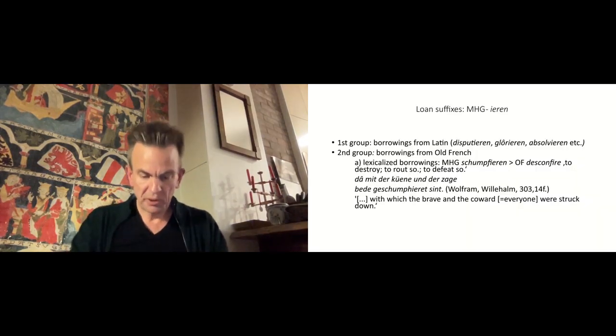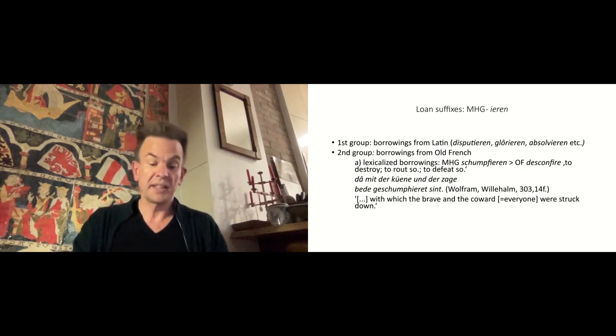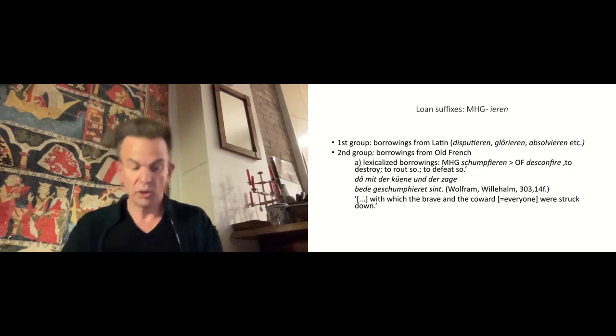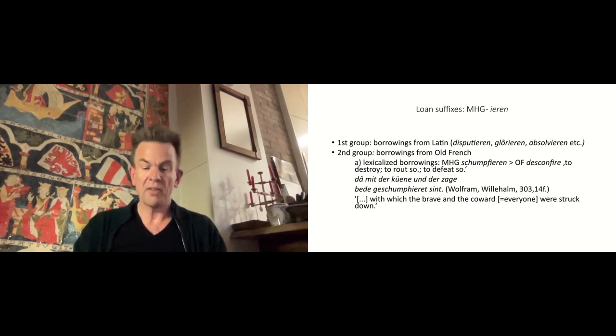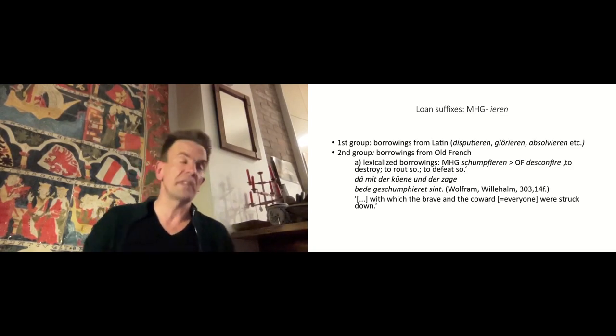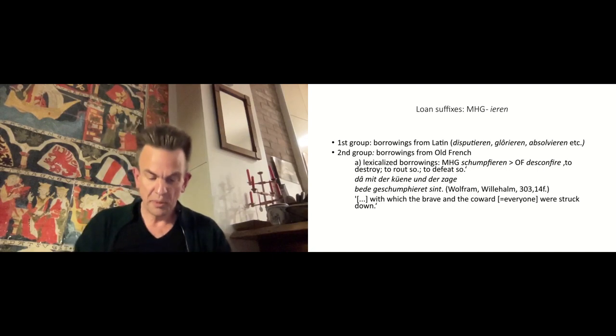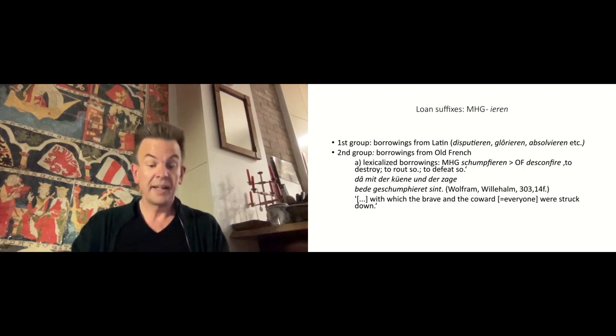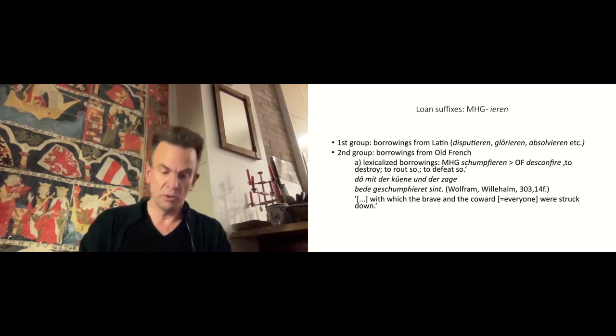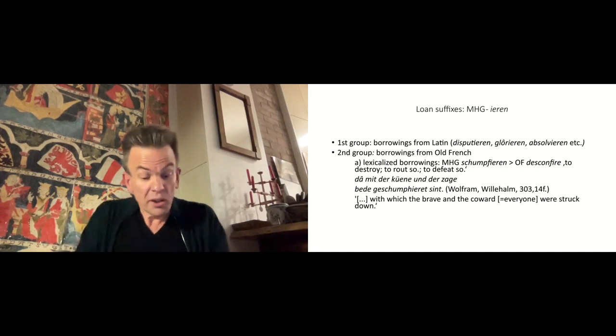The older group of -ieren formations contains lexemes that were borrowed from later church Latin, e.g. disputieren, glorieren, or absolvieren. The younger group includes borrowings from Old French, which came into German as part of the courtly relations we discussed previously. The formations of the second group can be differentiated according to their motivation. In cases like Middle-High German schumpfieren, from Old French desconfire, to destroy, put enemies to flight, defeat, it is probably the lexicalized formation that was borrowed. Damit der Kühne und der Zagge beide geschumpfiert sind.